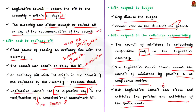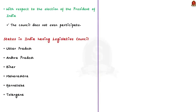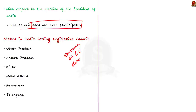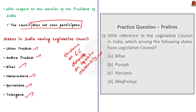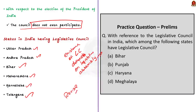With respect to the election of the President of India, the council does not even participate. Finally, the very existence of the council depends on the will of the assembly — the council can be abolished by parliament on the recommendation of the legislative assembly. Not all states have a legislative council. States having both legislative assembly and legislative council are called bicameral legislatures. At present, Uttar Pradesh, Andhra Pradesh, Bihar, Maharashtra, Karnataka and Telangana are the six states that have a legislative council.